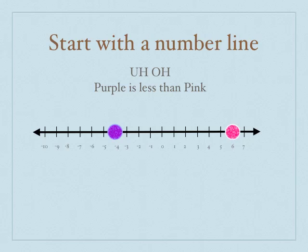So now my purple value is less than my pink value. So when I multiply or divide by a negative, it causes the dots to switch to the other side of the number line. And on the other side of the number line, the smaller number is now the bigger number.